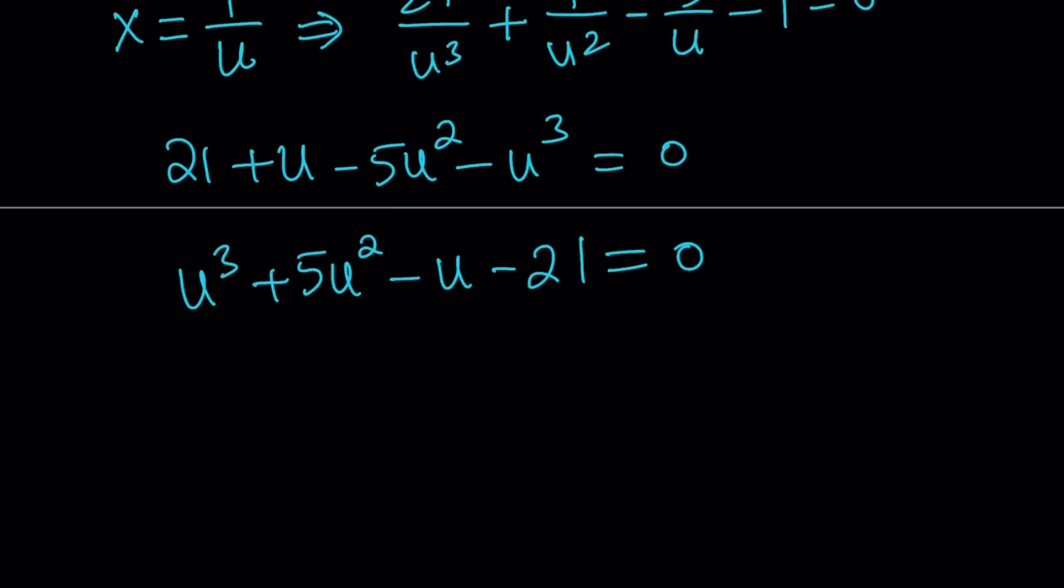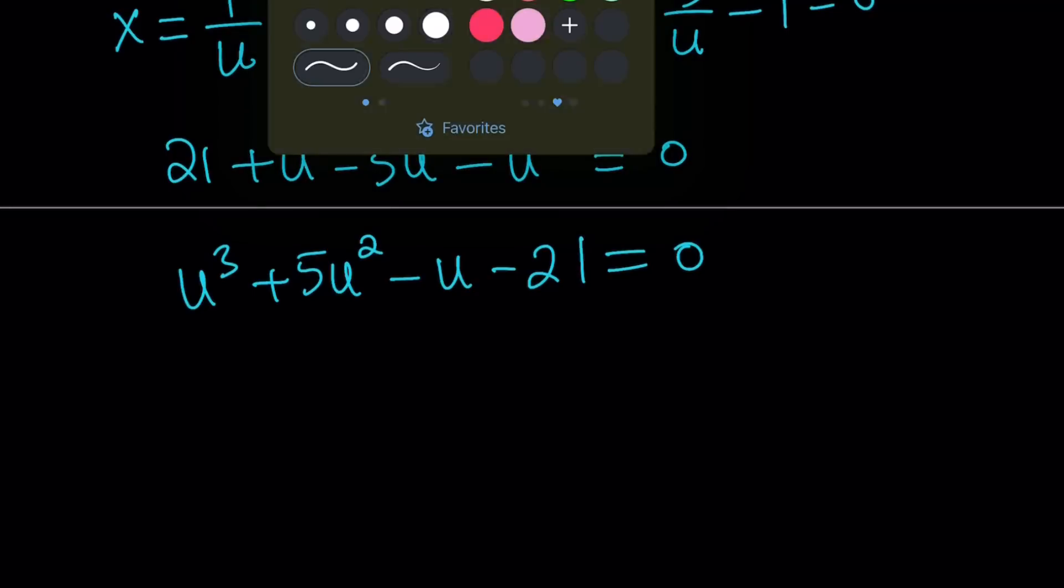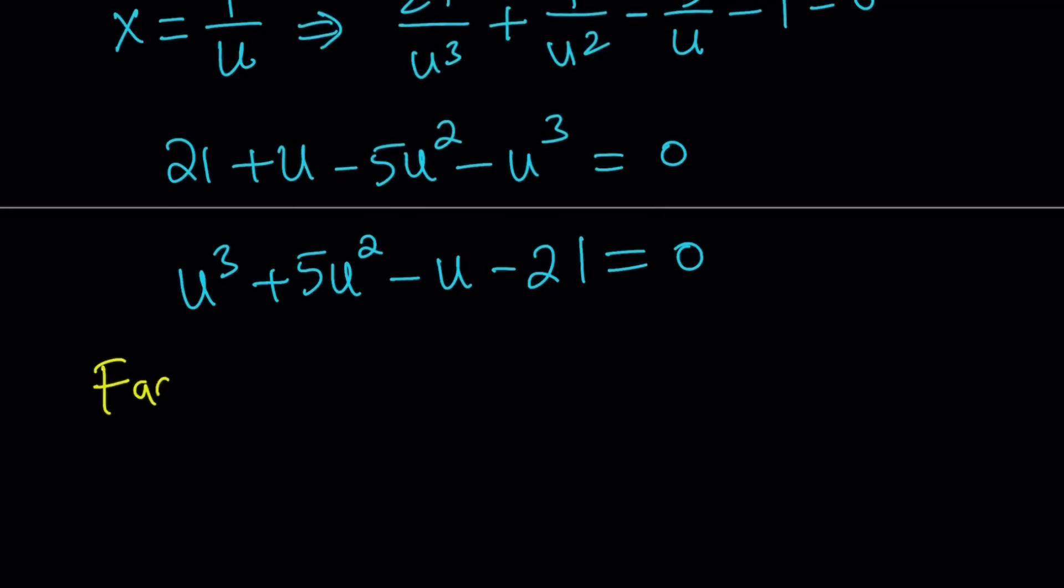Now what are we going to do? We're going to look for integer roots or rational roots. How do you find rational roots or possible rational roots? Rational root theorem, RRT. Okay, so we're going to be looking at factors of 21. What are factors or divisors? Same thing. Factors of 21. Well, we have ±1, ±3, ±7, and ±21.